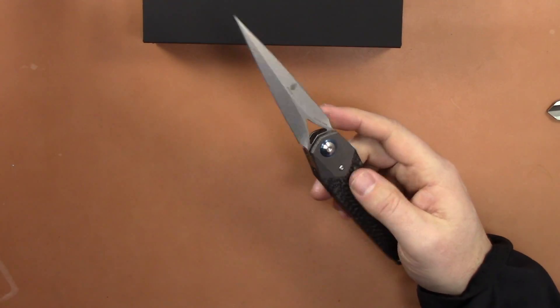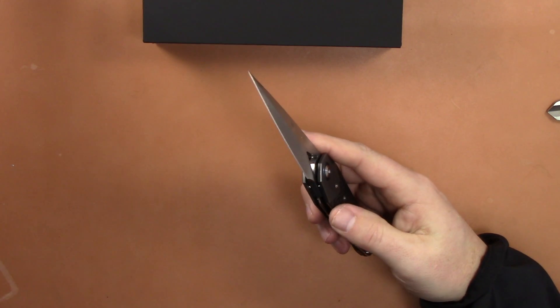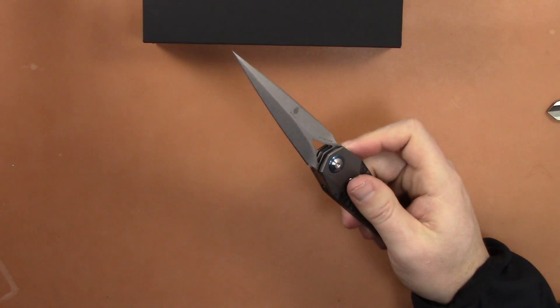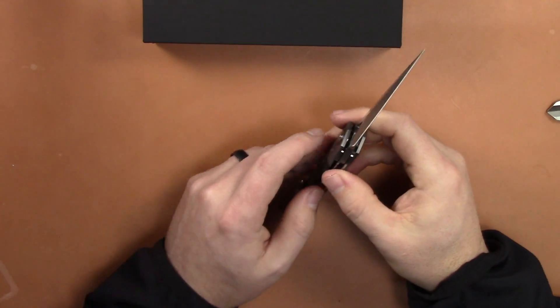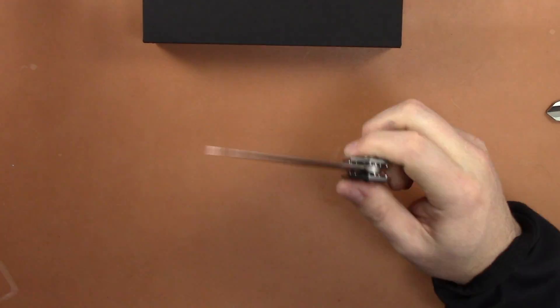And you have a frame lock slash liner lock, it's got more of a liner than a frame. Yeah, I would call it a liner lock. Very unique model again, love the name reference, pretty hilarious when you figure the name of the company is that makes the knife with the model number.